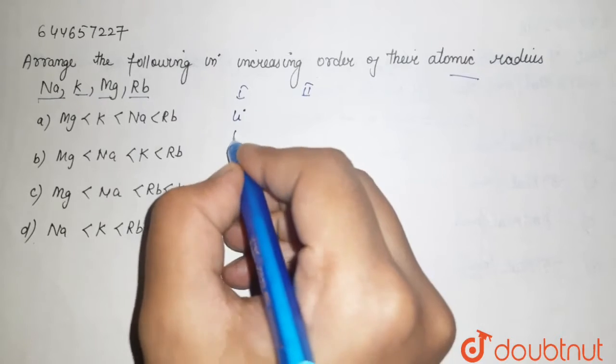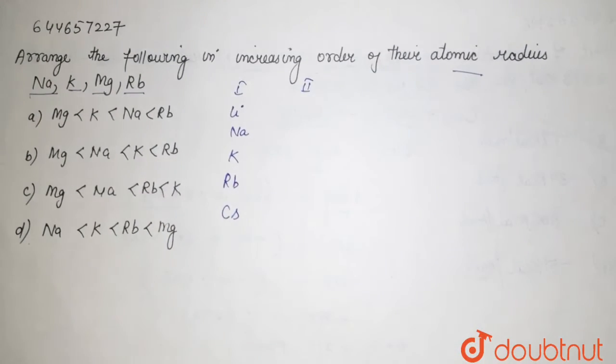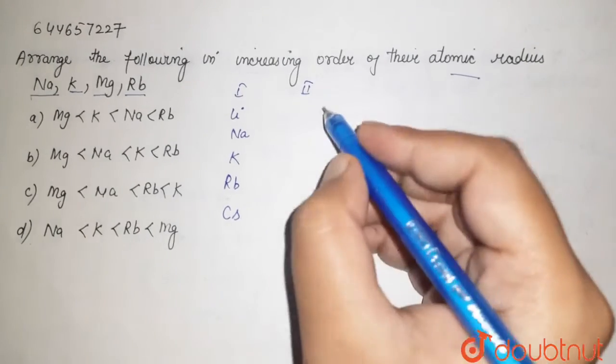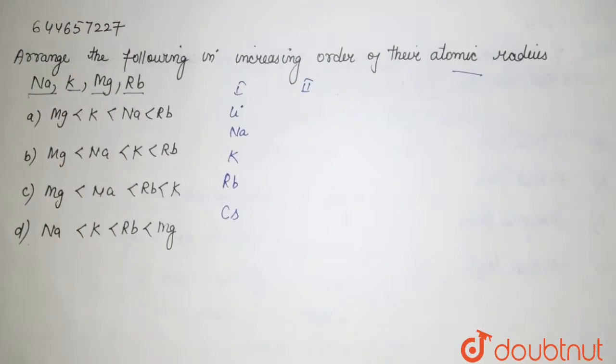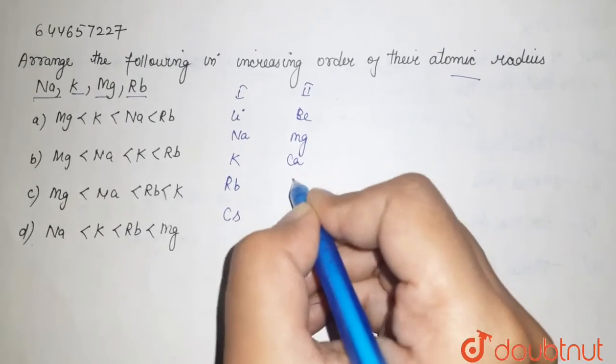...is lithium, sodium, potassium, rubidium, and here we are having cesium. Talking about your group two, these are alkaline earth metals, and your group one, that is your alkali metals. This is your beryllium, magnesium, calcium, strontium, barium.